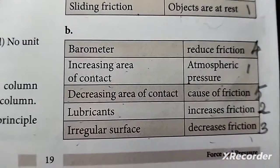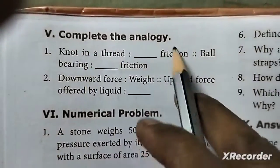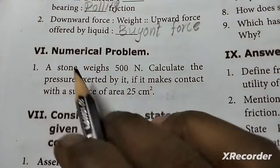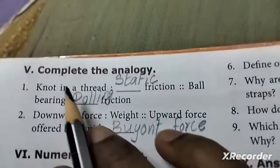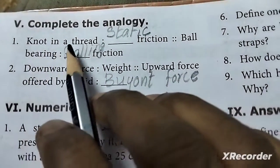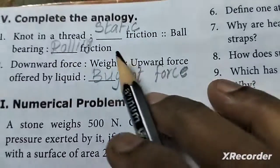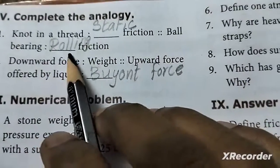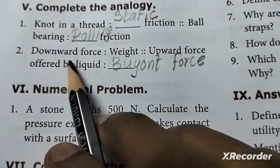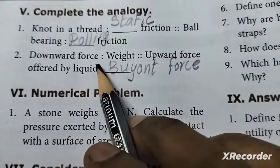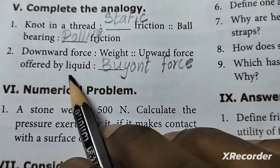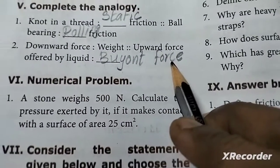Irregular surface — causes friction. Ball bearing — rolling friction. Downward force — weight. Upward force offered by liquid — buoyant force.